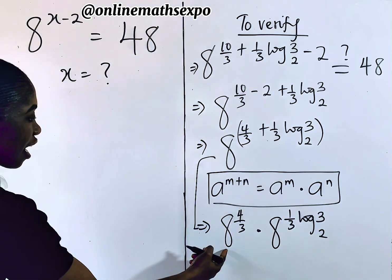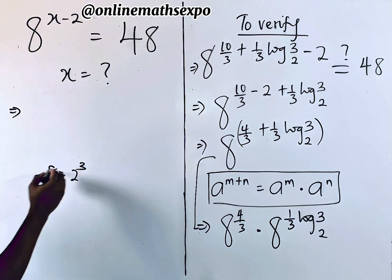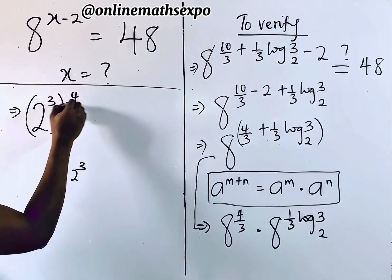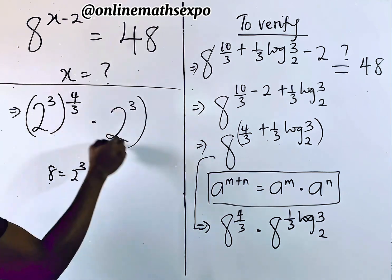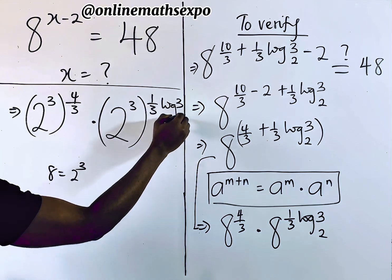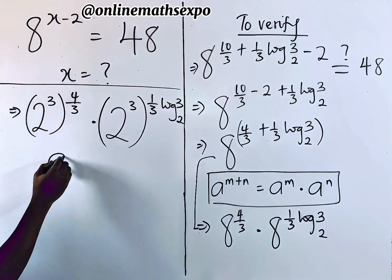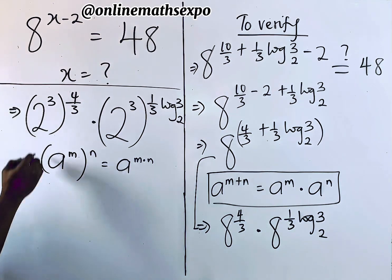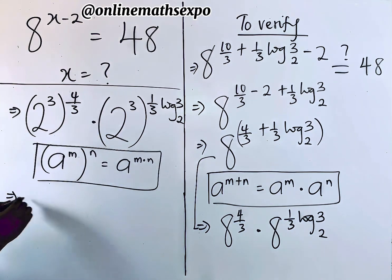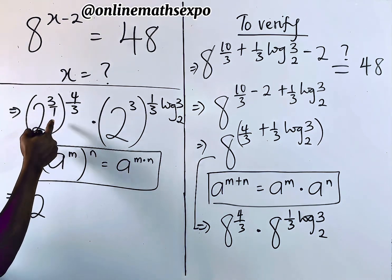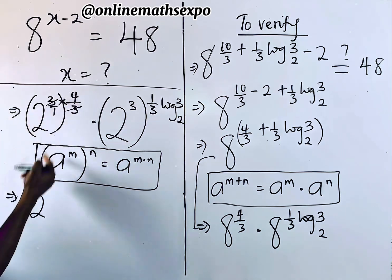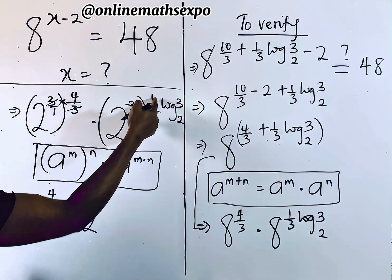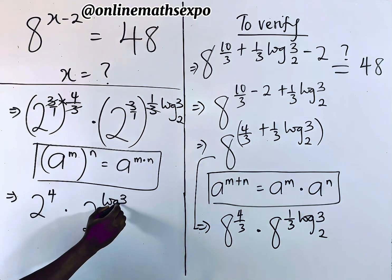Remember, for every (a^m)^n = a^(m×n). Applying this: 2^(3 × 4/3) equals 2^4, since the 3s cancel. And 2^(3 × (1/3) · log base 2 of 3): the 3 and 1/3 cancel leaving 1, so this is 2^(log base 2 of 3).